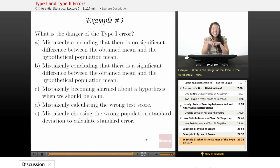Example three, what is the danger of the type 1 error? So this is a more conceptual question. The danger is mistakenly concluding that there is no significant difference between the obtained mean and the hypothetical population mean.